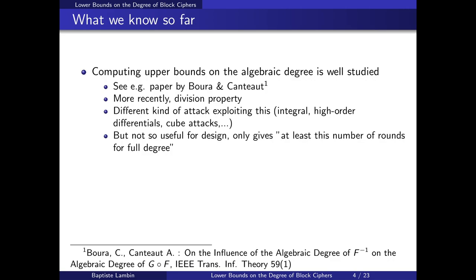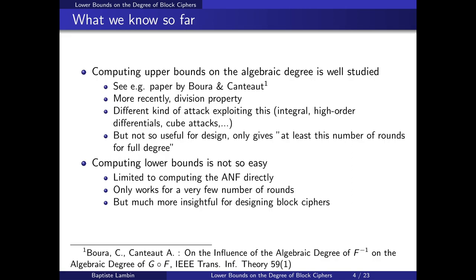But when we design a block cipher, these upper bounds are not so useful, because for example you can get a result like: after 10 rounds I know the degree will be at most 63, but you have no guarantee that after these 10 rounds you actually reach degree 63 — maybe it's much lower. So if you want to show something like this you would need lower bounds, but computing lower bounds is quite hard. So far it was only limited to essentially just computing the ANF, and for block ciphers it was limited to a few rounds because there are too many variables and the degree grows too quickly.